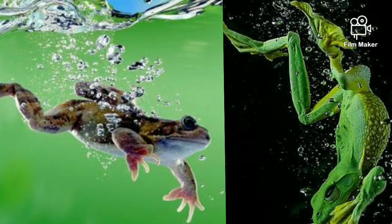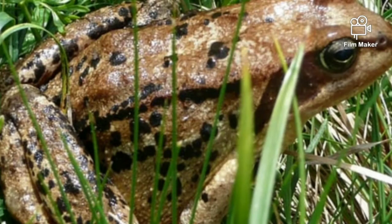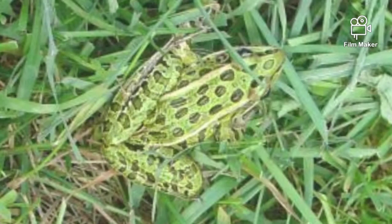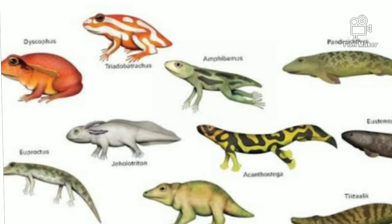Do you know what helps a frog to breathe underwater? Frogs breathe through the skin in water, and using the nose and lungs on land. The typical color of a frog's back helps it to hide among grasses. Due to their ability to live on land as well as in water, we call them amphibians. Here is a list of some amphibian animals.